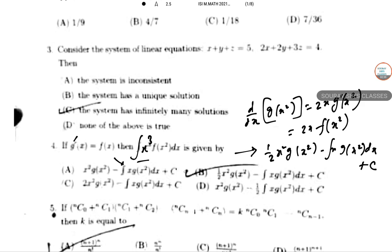Our answer came as (1/2) x squared · g(x squared) minus the integral of x · g(x squared) dx plus C. Hence option B is the answer in this case.